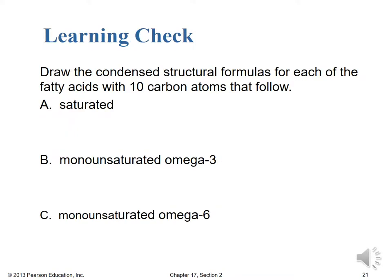Learning check: draw the condensed structural formulas — or better yet, the skeletal structures — for each of the following 10-carbon fatty acids: a saturated fatty acid, a monounsaturated omega-3 fatty acid, and a monounsaturated omega-6 fatty acid. It's 10 carbon atoms total in each case. Stop the video while you make your drawings and start it back up when you're ready to check your work.